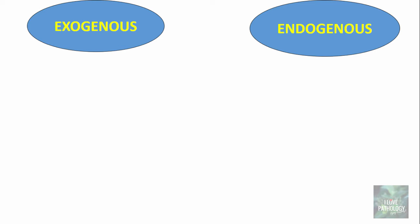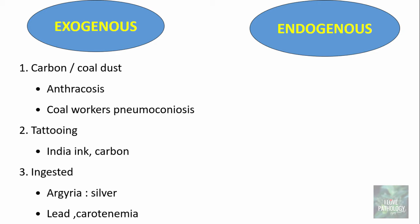The exogenous pigments can be in the form of carbon or coal dust. When it is carbon, we refer to it as anthracosis. When there is accumulation of coal dust, we refer to it as coal workers' pneumoconiosis. It can also be in the form of injected pigment such as tattooing — Indian ink or carbon. It could be ingested pigments such as ingestion of silver, referred to as argyrosis, ingestion of lead, or carotenemia.